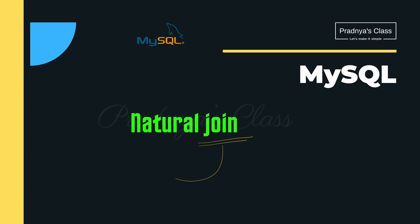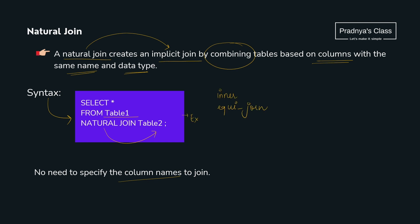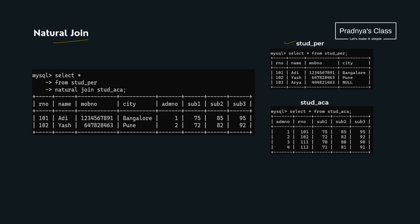There is one more type of join — natural join. Natural join creates an implicit join, meaning we don't need to mention any column name for the join. It automatically combines tables on matching columns — columns with the same name and same data type. The syntax is: select star from table one natural join table two. We consider the same two student tables, and the query is: select star from student personal natural join students academics.